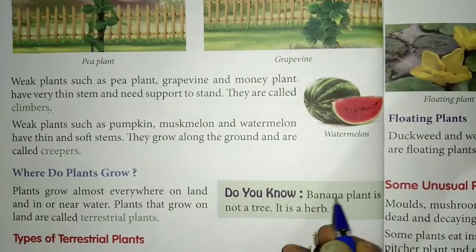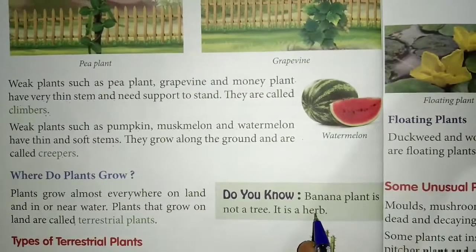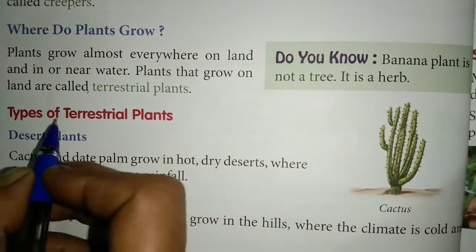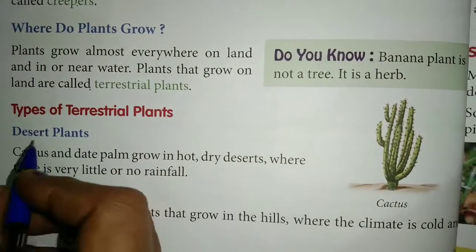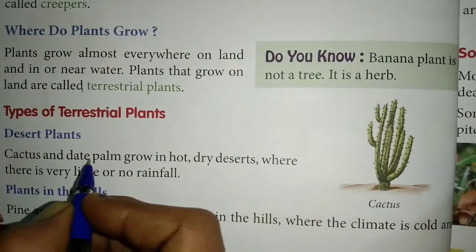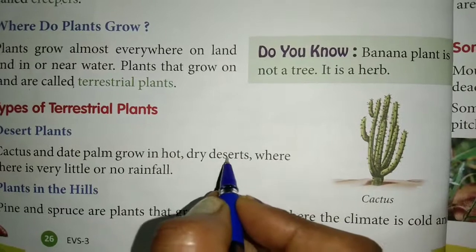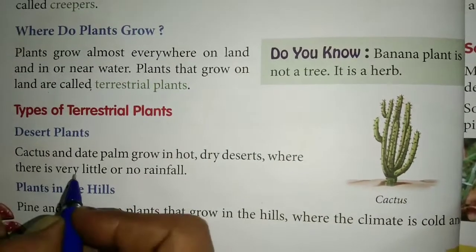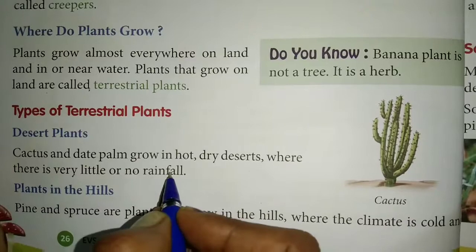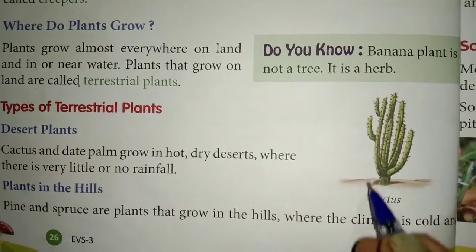Do you know the banana plant is not a tree — it is a herb! Next, types of terrestrial plants: desert plants. Cactus and date palm grow in hot dry deserts where there is very little or no rainfall. Look at this picture — this is a cactus plant.